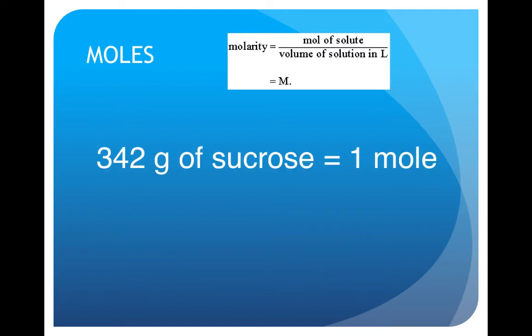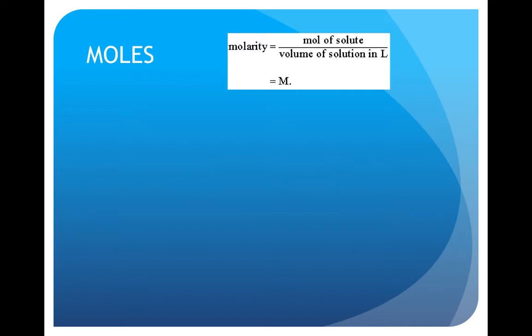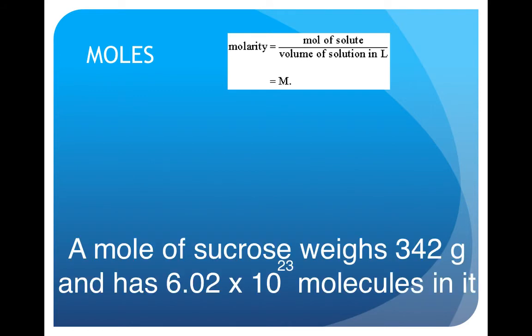Therefore, if we take 342 grams of sucrose, we have 1 mole. The number of molecules in a mole of any substance is equal to 6.02 times 10 to the 23rd, which is Avogadro's number. A mole of sucrose weighs 342 grams and has 6.02 times 10 to the 23rd molecules in it.